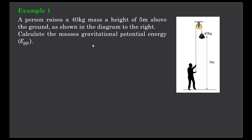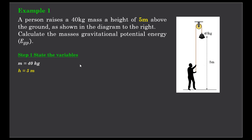Example number one: a person raises a 40 kilogram mass a height of 5 metres above the ground, as shown in the diagram to the right. Calculate the gravitational potential energy. So let's identify and state the variables. You can see there's a mass M of 40 kilograms, and a height of 5 metres against the reference of the floor.